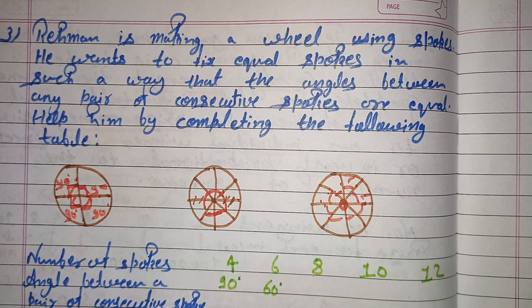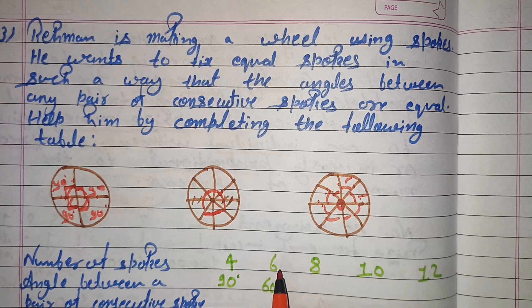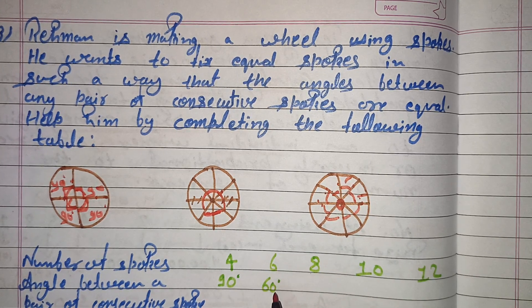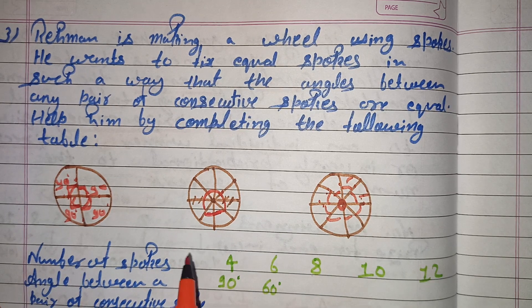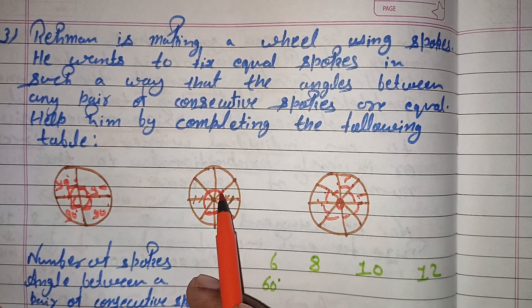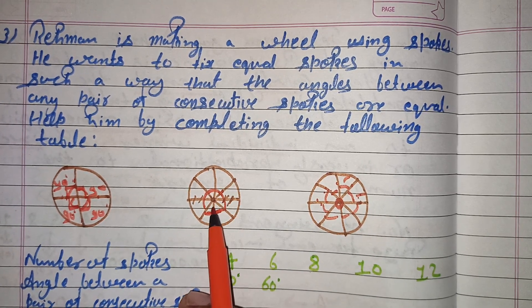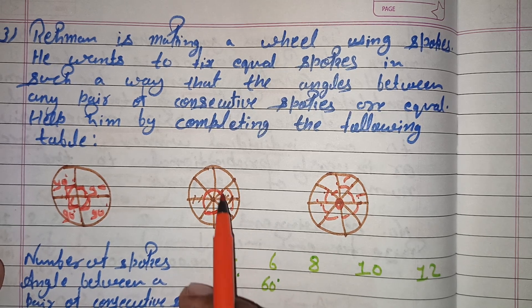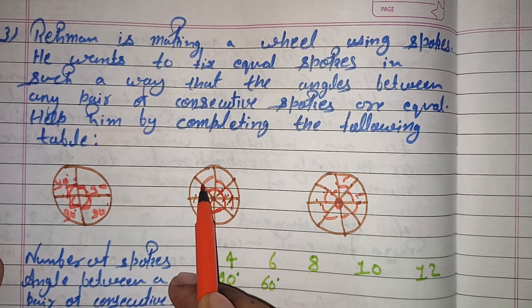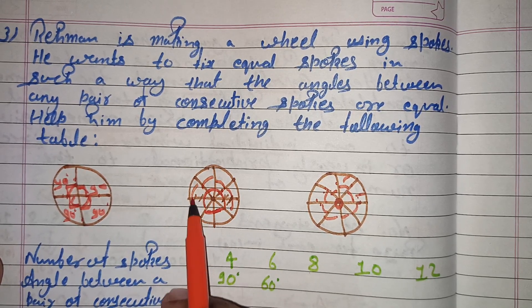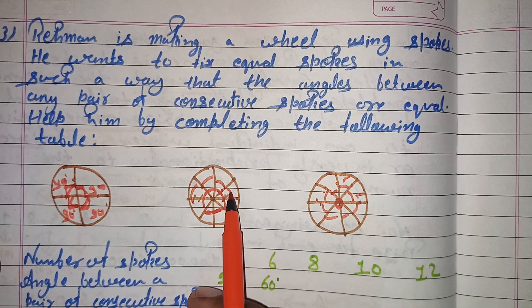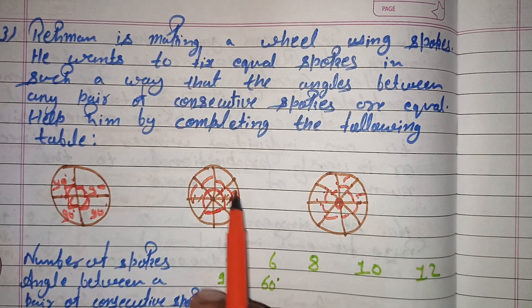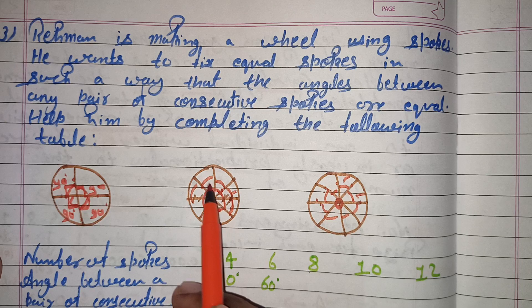If we put 6 spokes, then the angle is divided into 60 degrees each. So each consecutive angle between the 6 spokes is 60 degrees.